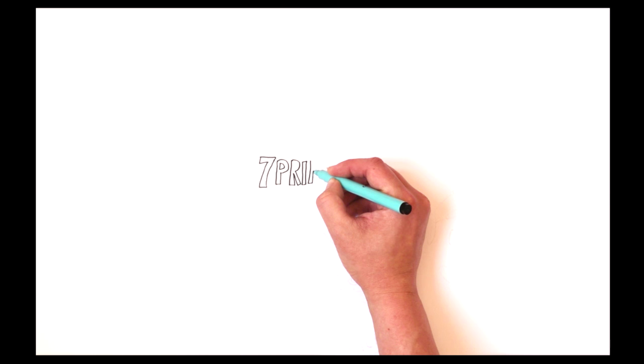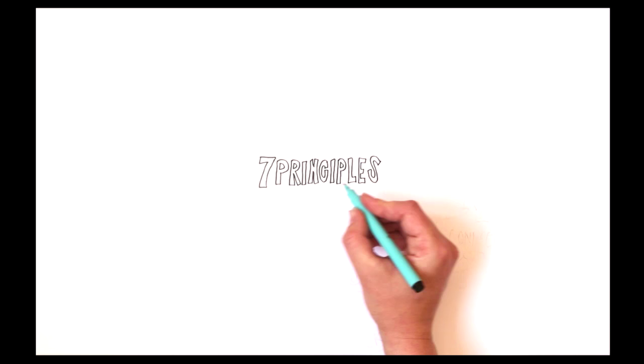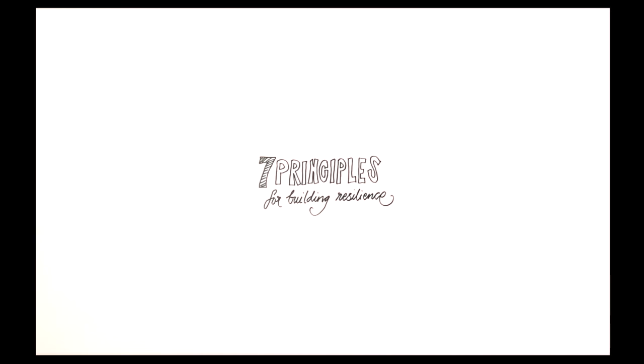In our globalised society, there are virtually no ecosystems that are not shaped by people and no people without the need for ecosystem services. A resilience thinking approach investigates how the interaction between people and nature can best be managed. Here are seven principles to help you apply this approach.